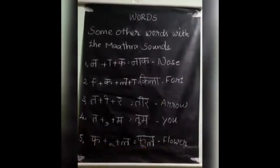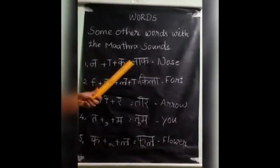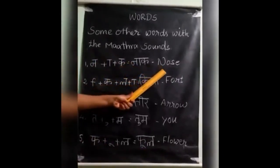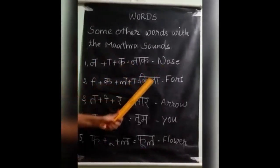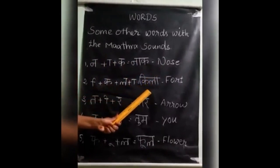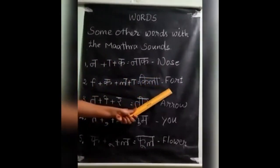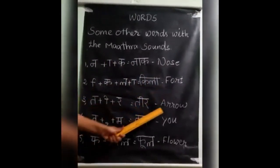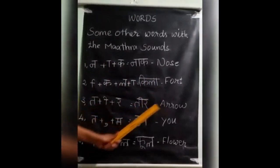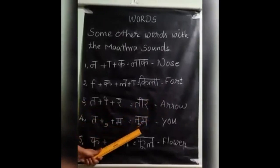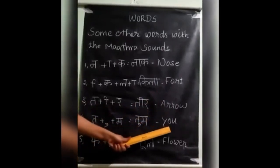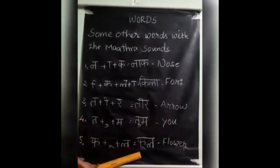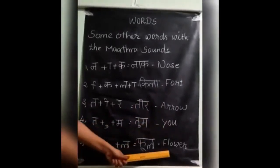Once again: Naak — nose. Khila — foot. Teer — arrow. Tum — you. Fool — flower.